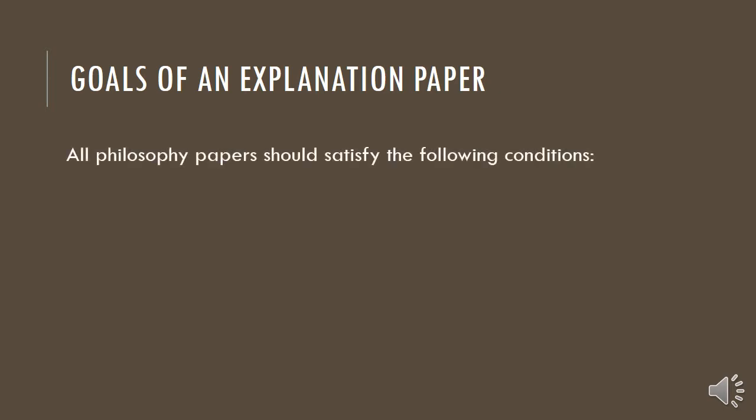All philosophy papers should follow some basic guidelines and satisfy the following conditions. For one, it should strive to the utmost to be clear. Words should be used in their normal sense. Sentences should be constructed in a way that are absolutely transparent to the reader. It should be clear what the author is trying to accomplish in the paper. It should not be difficult to find out what the author's position is, what their goals are, and how they're accomplishing their task. Clarity, clarity — strive to be clear.